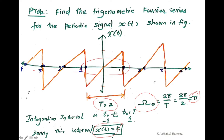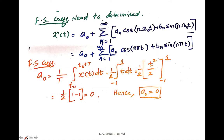This periodic signal extends from minus infinity to plus infinity and we have considered only a small portion of the signal. The Fourier series is: x(t) is equal to a naught plus summation from n equal to 1 to infinity of a_n cos(nω₀t) plus b_n sin(nω₀t). Now we need to find out a naught, a_n, and b_n.